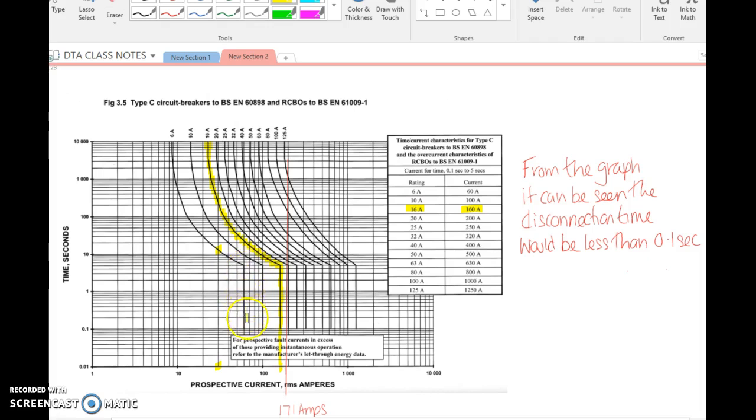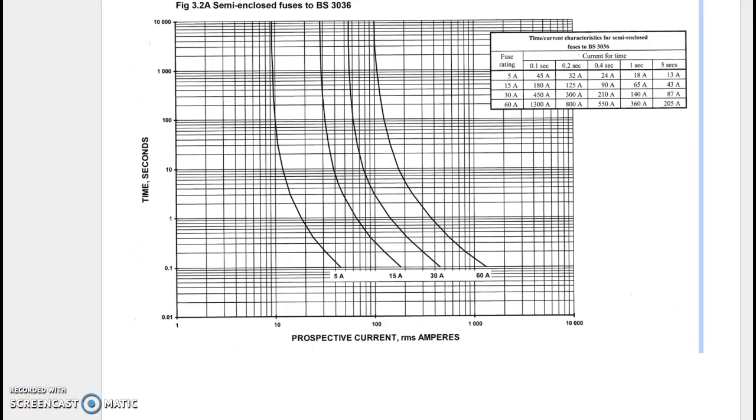On the subject of time current curves, we're going to look at the common curves on protective devices generally found in households and small commercial circuits. Starting with the old-school BS 3036 semi rewireable fuse wire, still in circulation today. There's not that many of them, a lot of installations have been upgraded over the years, but they are still out there and recognized as a British standard protective device if they've got the right size fuse wire in.